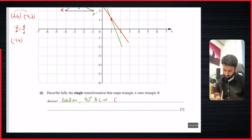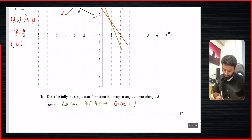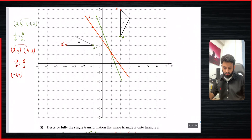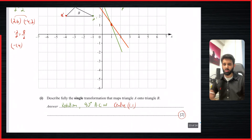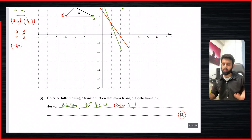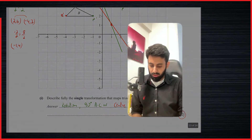So the center is (1, 1). Let's just double check: rotation 90 degrees anti-clockwise — from 12 to nine. And the center is (1, 1). That gets you three marks, or two marks in this case. I hope you've understood this concept. Make sure to get past papers — hard copy or printed — and practice this on your own using this method to see whether you get the right answer. That's it for this video. I'll see you in the next video where I'll teach you how to distinguish between reflection and rotation, since these are the two transformations that students tend to confuse the most. Take care, bye-bye.